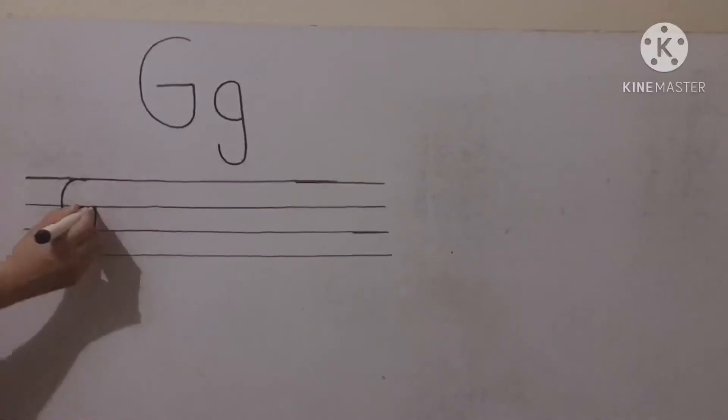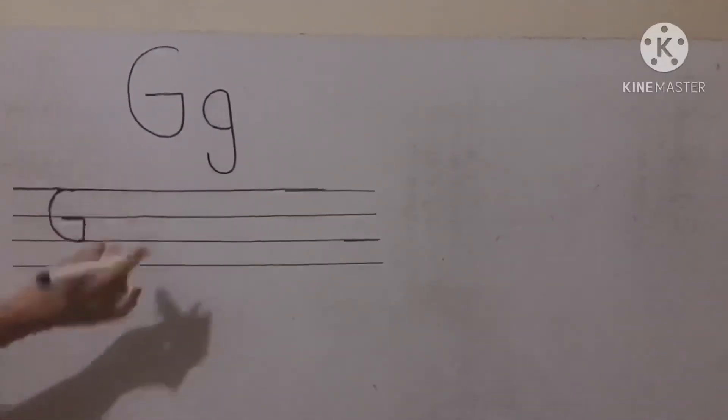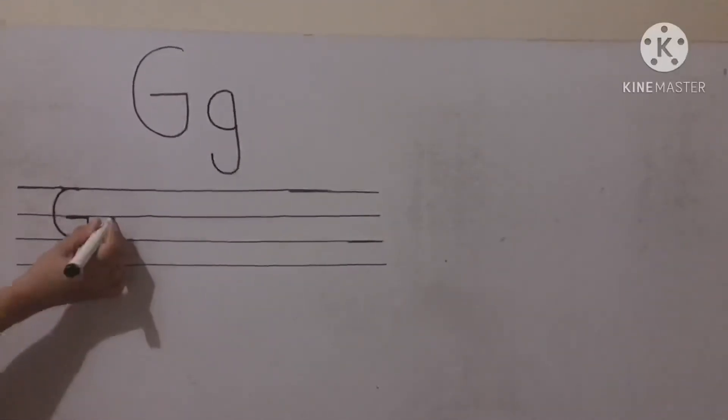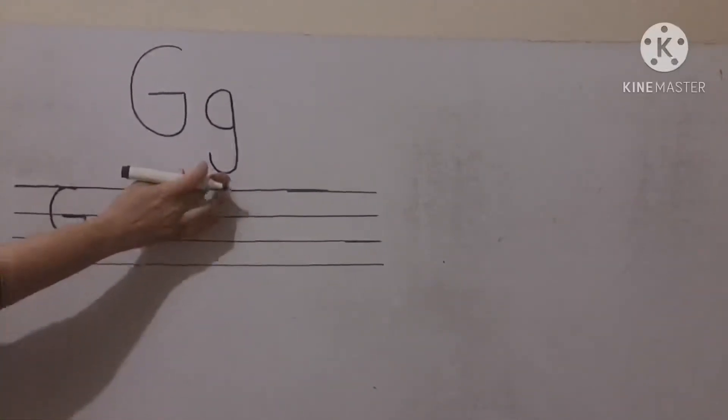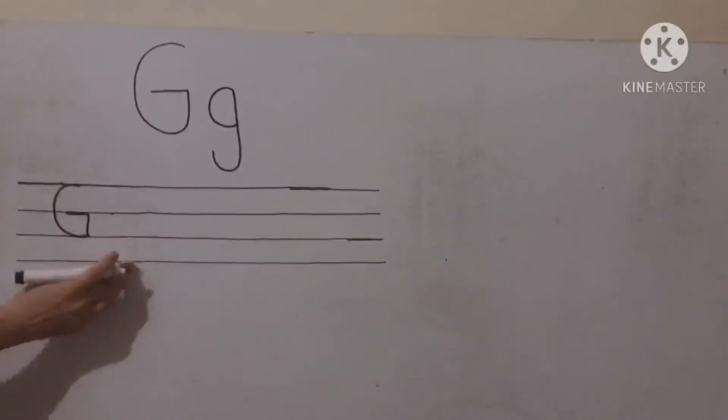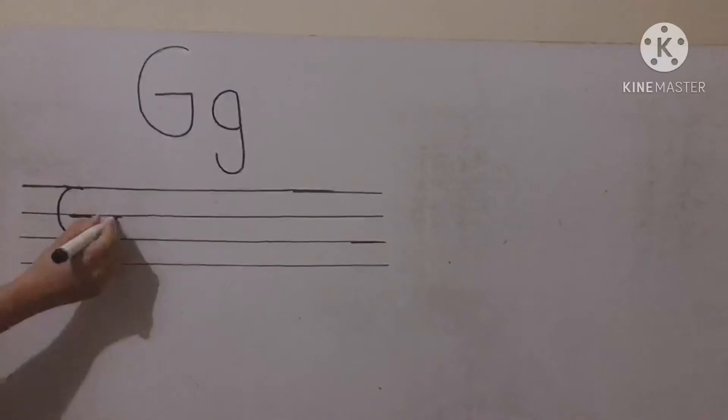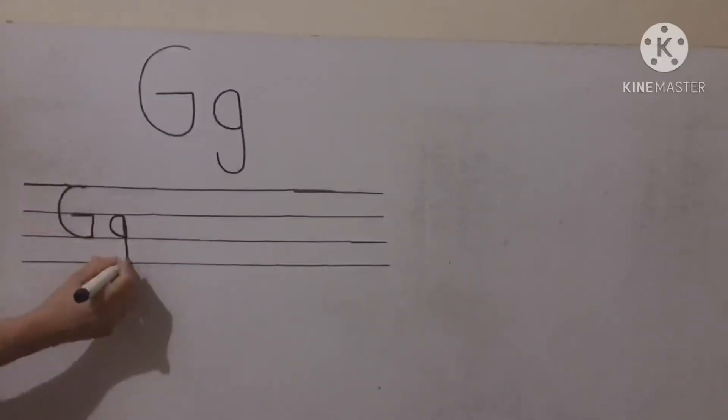And for the small g, what we have to do, we have to start from the second line because it's a tail letter. This letter is a tail letter and it will touch the last lower line. Okay.